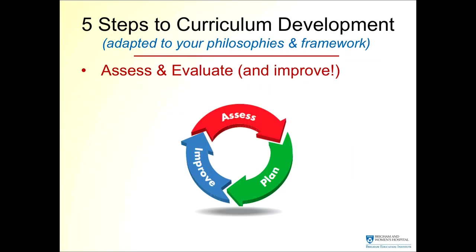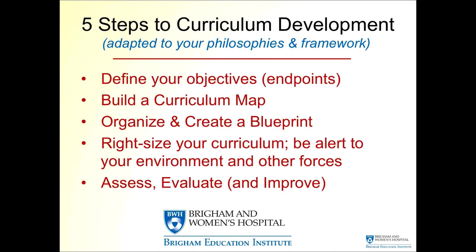The fifth and final step to curriculum development is to make sure that you assess, evaluate, and constantly improve. A curriculum itself is rarely static — it is always evolving. So my five steps are: define your objectives and endpoints, build a curricular map, organize and create a blueprint, right-size your curriculum and be alert to environmental and political forces, and then always assess, evaluate, and improve.